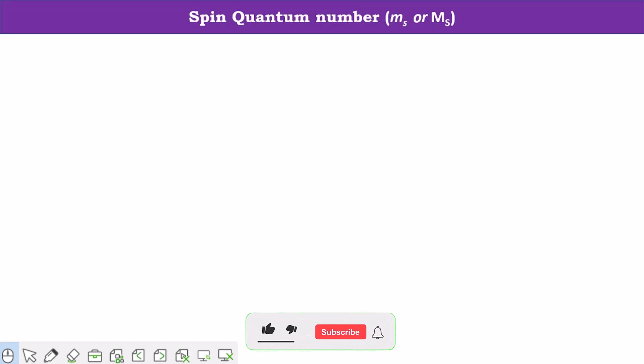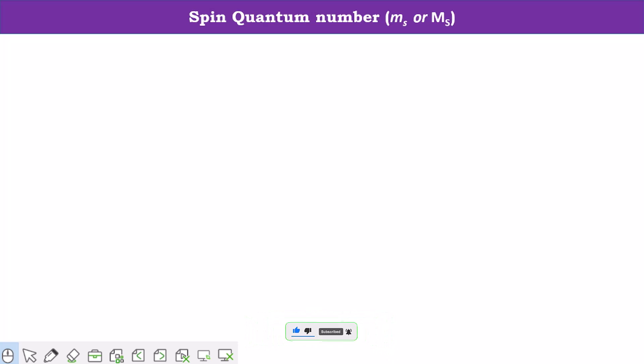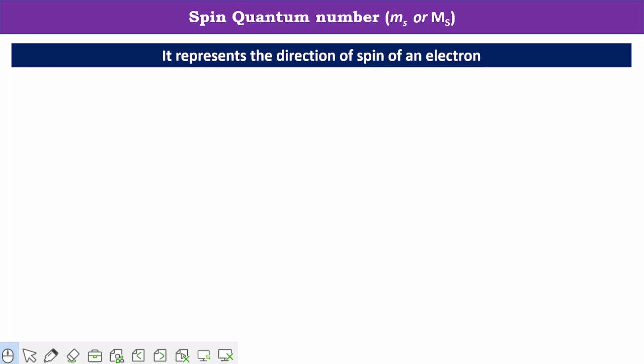Hello friends, in this video we are going to learn about spin quantum number. This spin quantum number is represented with the symbol MS. It represents the direction of spin of an electron.